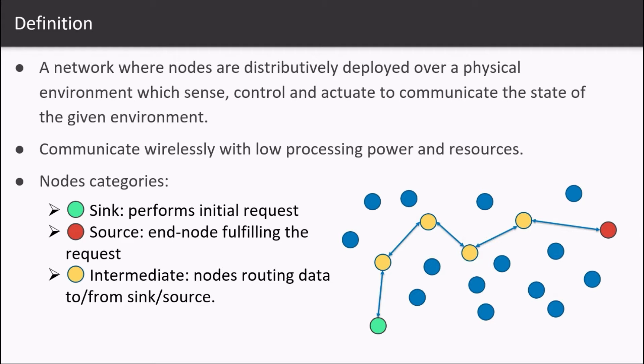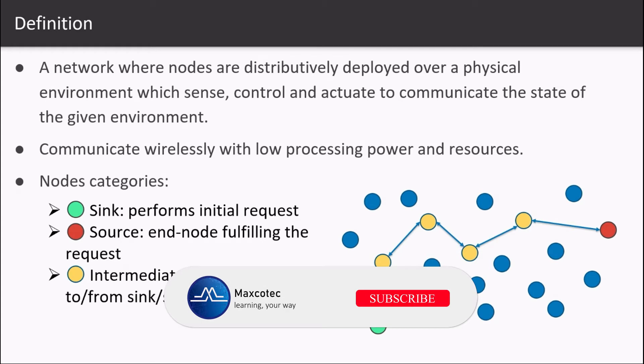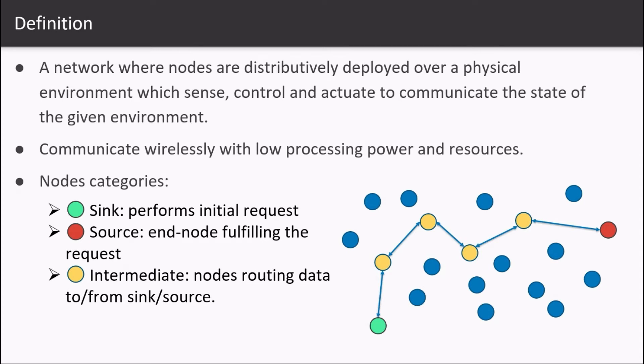Source node measures the data and reports them to the sink node or sometimes to intermediate nodes. We can also have multiple source nodes in a network in such cases where sink node is interested in aggregated data from multiple source nodes.